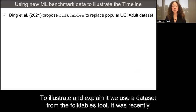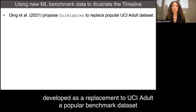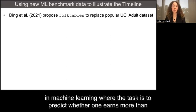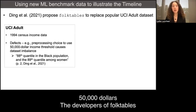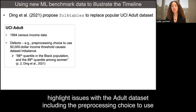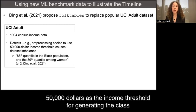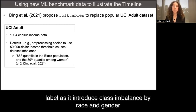To illustrate and explain it, we use a dataset from the Folk Tables tool. It was recently developed as a replacement to UCI Adult, a popular benchmark dataset in machine learning, where the task is to predict whether one earns more than $50,000. The developers of Folk Tables highlight issues with the adult dataset, including the pre-processing choice to use $50,000 as the income threshold for generating the class label, as it introduces class imbalance by race and gender.